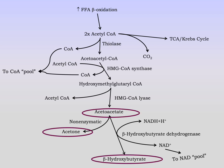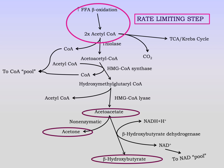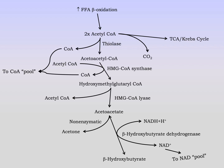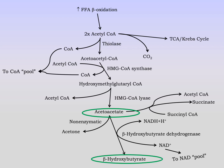We can also utilize ketone bodies — specifically beta-hydroxybutyrate and acetoacetate. Beta-hydroxybutyrate gets reconverted back to acetoacetate. Acetoacetate reacts with succinyl-CoA, forming acetyl-CoA and succinate, which returns to the Krebs cycle to reform succinyl-CoA. The acetyl-CoA then goes to the Krebs cycle to allow for production of NADH+, FADH2, and ATP.